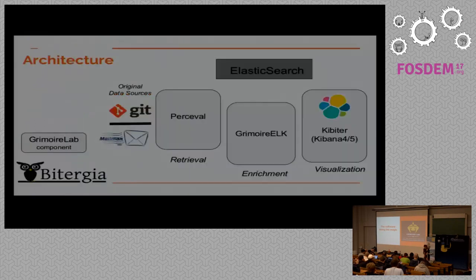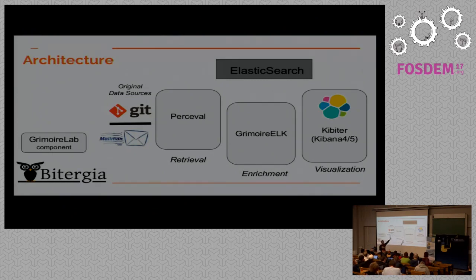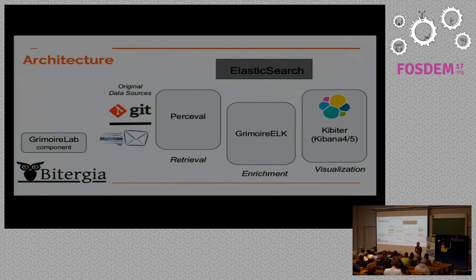We started about one year ago, and in fact this is the first time we are presenting it fully. Grimoire Lab has a very simple data flow structure. The data flow starts in repositories — Git, GitHub, Mailman, whatever. We have a tool called Perceval which basically goes to repositories, extracts information, and uploads to Elasticsearch if you want. Perceval is completely database agnostic — it only gets the data and produces a collection of JSON documents that you can upload anywhere you want. In our case we have software for uploading to Elasticsearch.